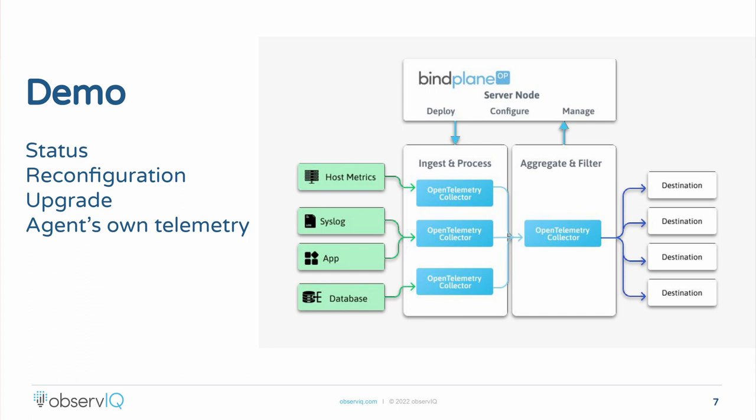Since agents can report status, you can then get in-depth error messages. So if I introduce a simple error to this configuration file — something that happens very often when we're trying to configure complex agents — it shows us exactly what's going on and tells us exactly how to resolve that. That's all standard as defined in the OpAMP protocol.